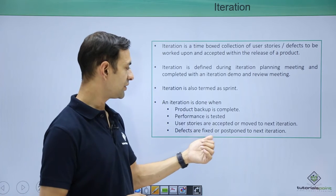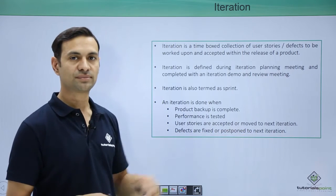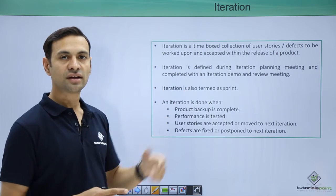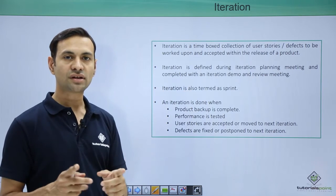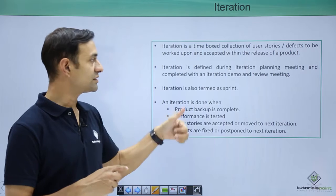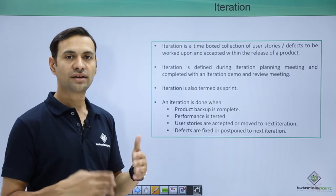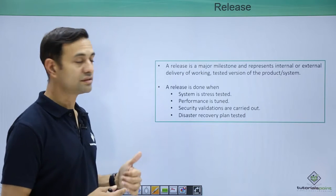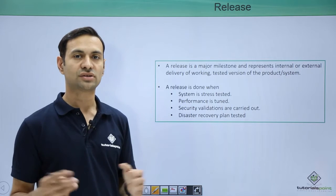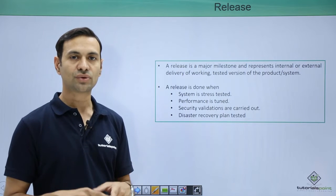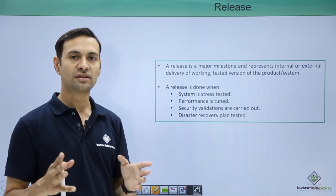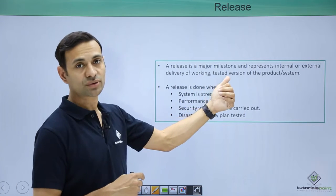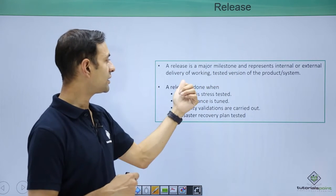An iteration is done only when each user story and defect in the iteration are in an accepted state. If not in accepted state, they should be moved to the next iteration. Defects are fixed or postponed to the next iteration. Once iterations are done, we come to the next artifact: release.